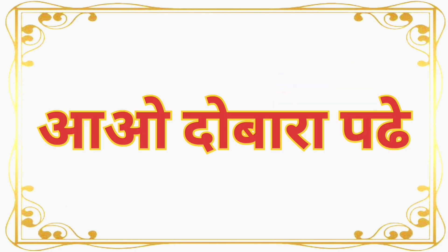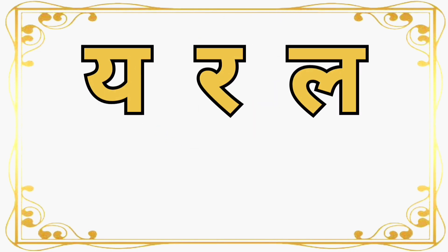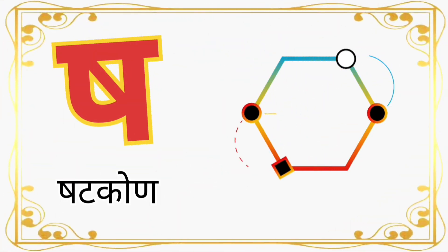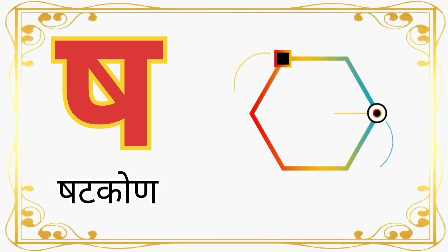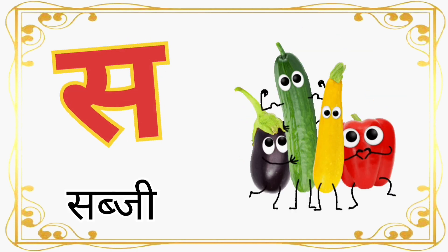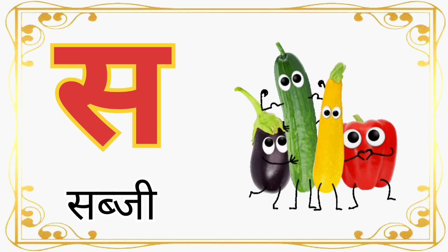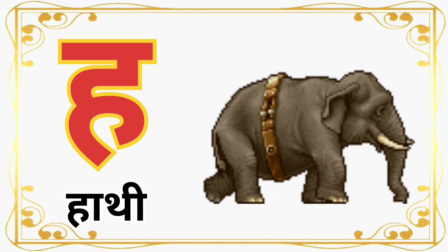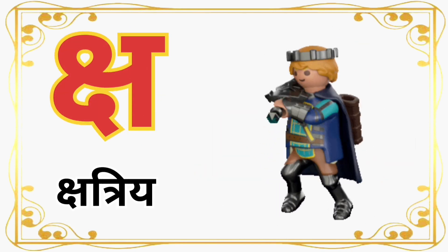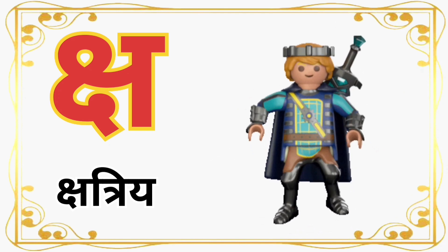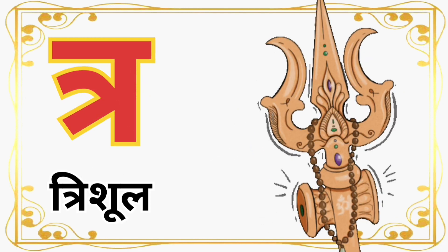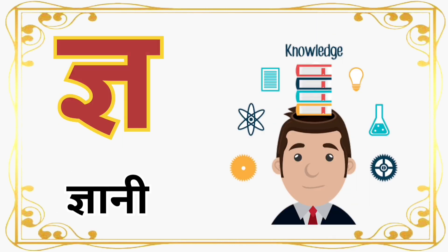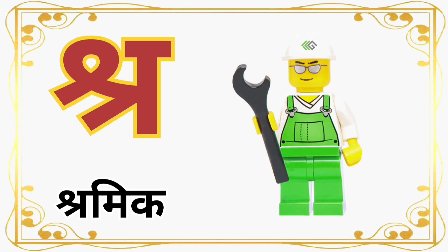आओ दुबारा पढ़ें: या, रा, ला, वा, शा। ष से षट्कोण (Sha for hexagon). स से सब्जी (Sa for vegetable). ह से हाथी (Ha for elephant). क्ष से क्षत्रिय (Ksha). त्र से त्रिशूल (Tra for trident). ज्ञ से ज्ञानी (Gya for wise person). श्र से श्रमिक (Shra for worker).